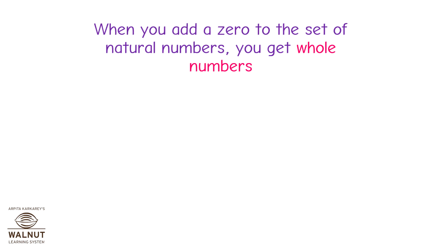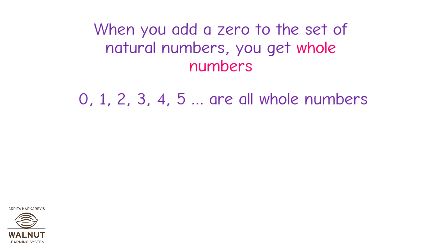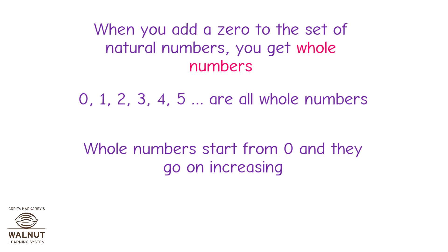When you add a zero to the set of natural numbers, you get whole numbers. 0, 1, 2, 3, 4, 5, etc. are all whole numbers. Whole numbers start from 0 and they go on increasing.